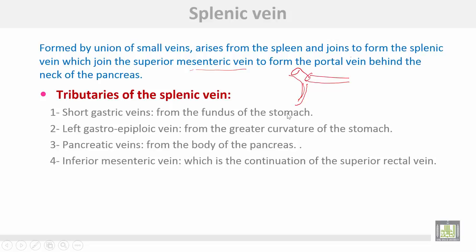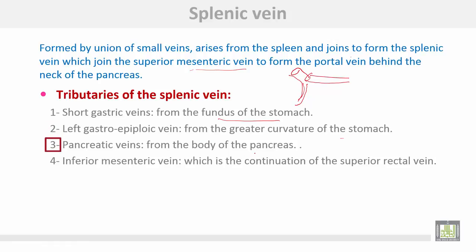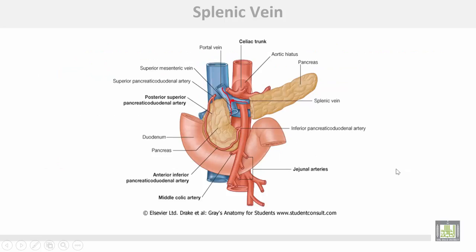The tributaries of the splenic vein are: number one, short gastric veins from the fundus of the stomach; number two, the left gastro-epiploic vein from the greater curvature of the stomach; number three, pancreatic veins from the body of the pancreas; and lastly, the inferior mesenteric vein, which is a continuation of the superior rectal vein. The splenic vein joins the superior mesenteric vein just behind the neck of the pancreas to form the portal vein.